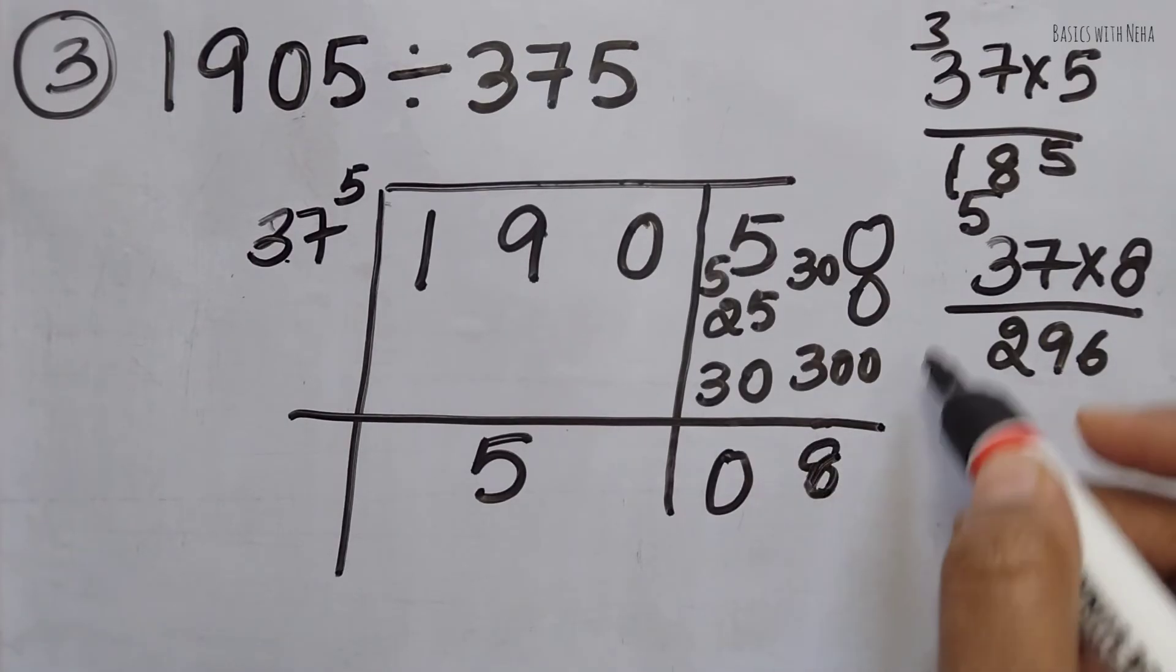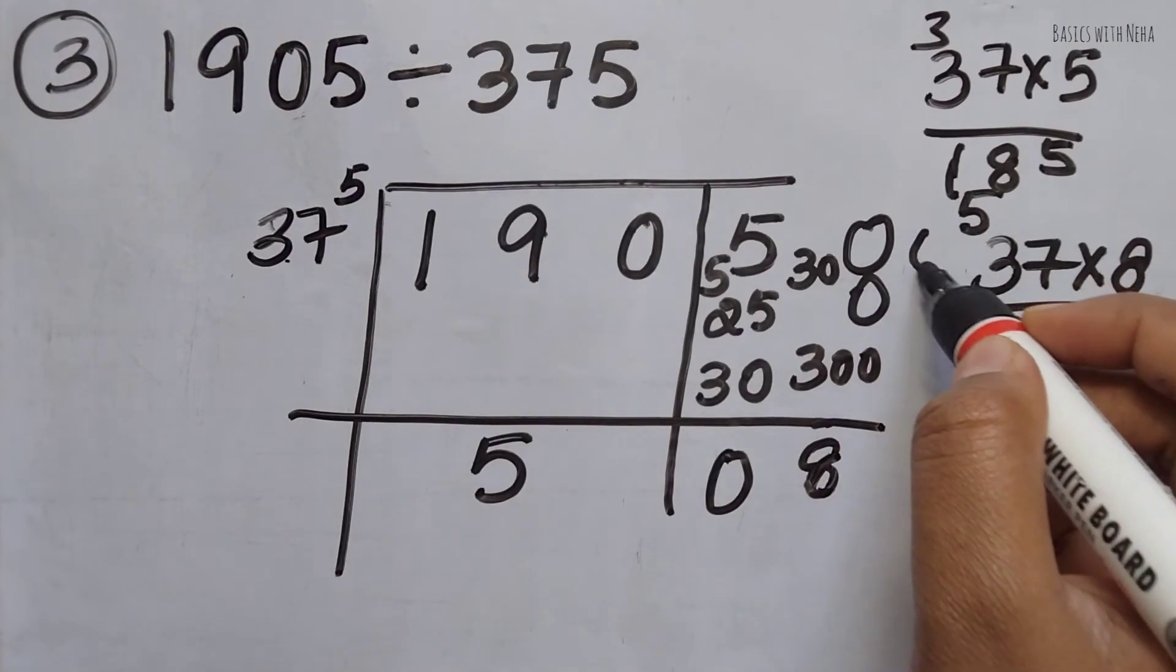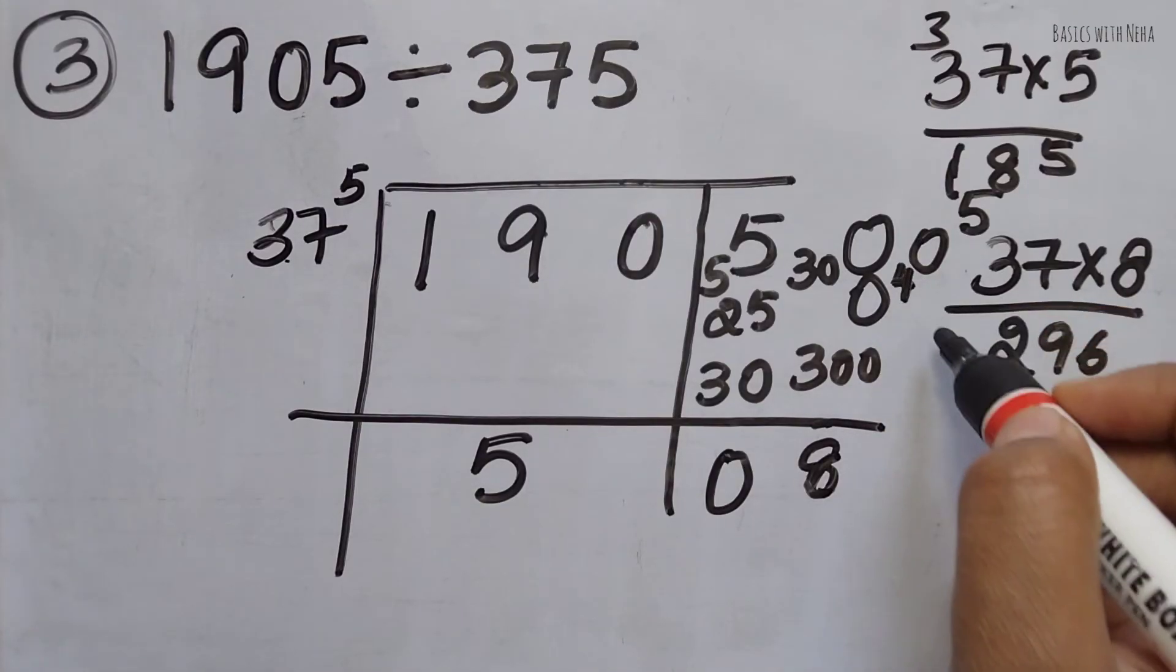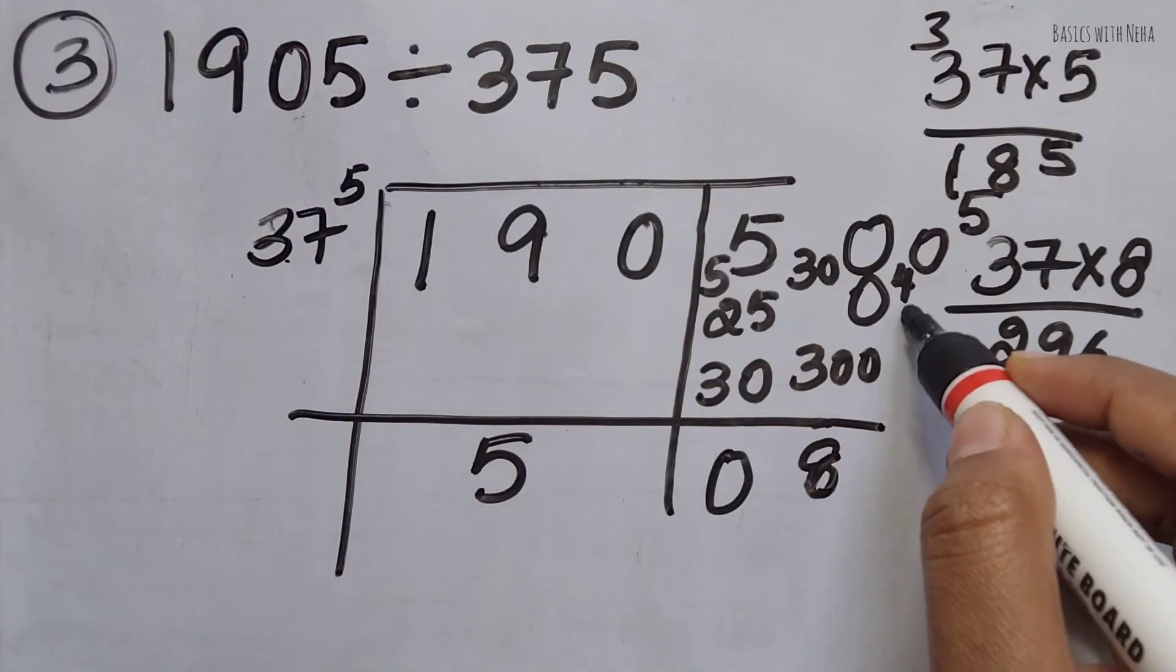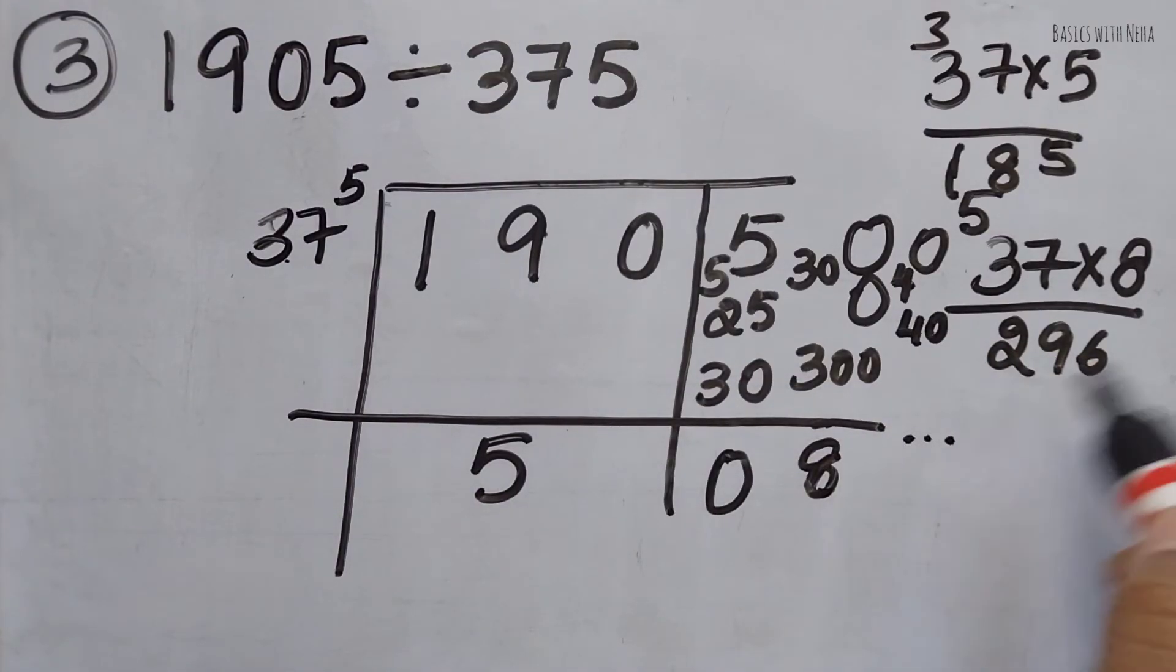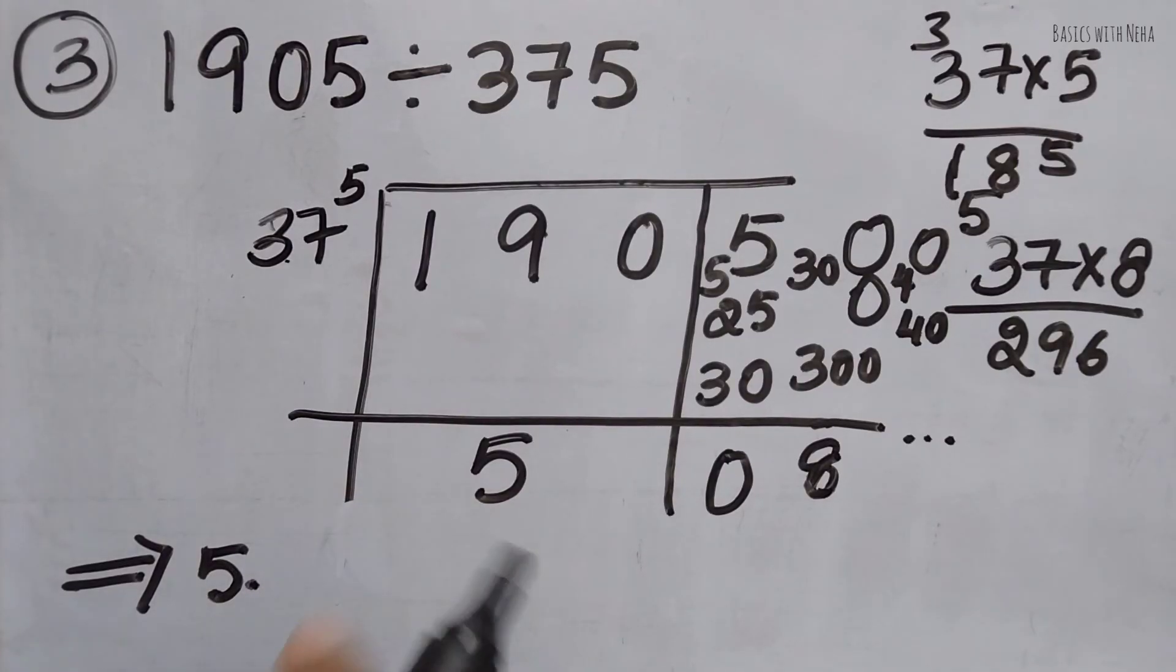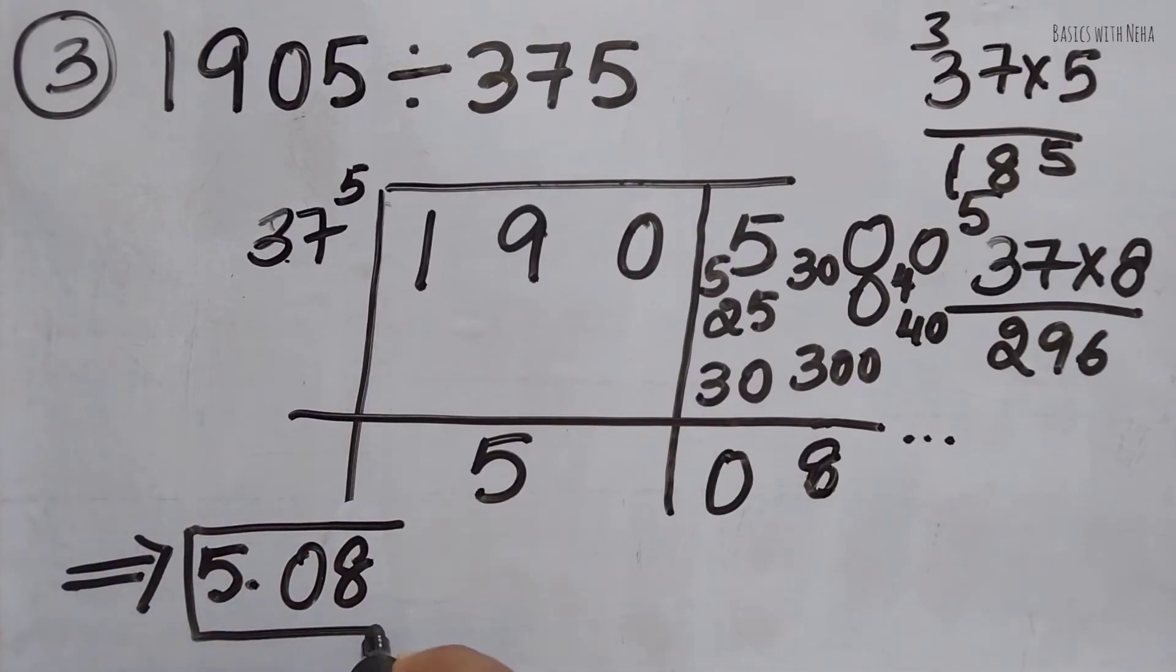The next number that's going to be formed will have 4 as the remainder, so it will be 40. Then I'm going to do 8 times 5, which is 40, and then 0, and it will continue. You have to stop the decimal place. So finally, I can write the answer as 5.08. I can just stop it at two decimal places.